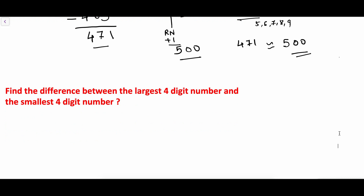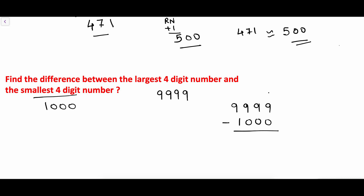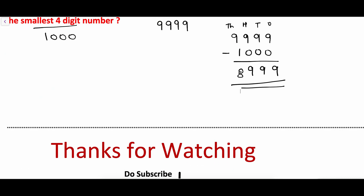Now let's take one more example. The question is: find the difference between the largest 4-digit number and the smallest 4-digit number. The largest 4-digit number is 9999 and the smallest 4-digit number is 1000. Subtracting: 9 minus 0 is 9, 9 minus 0 is 9, 9 minus 0 is 9, and 9 minus 1 is 8. So the final answer is 8999.